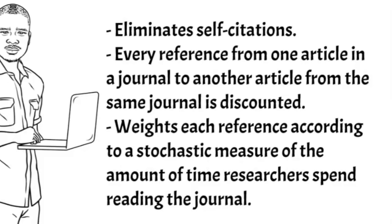These three are quite rigorous. Google also offers a ranking system, but the Google citation ranking system tends to be less rigorous because it may include citations from newspaper articles, blog posts, or anything online — which means it's not necessarily from other researchers referencing that particular article.